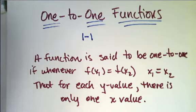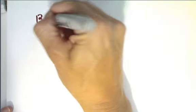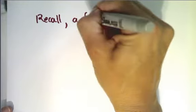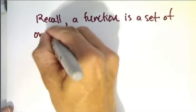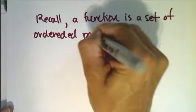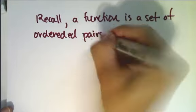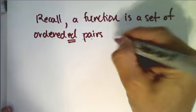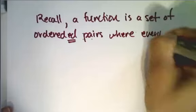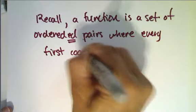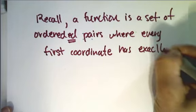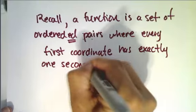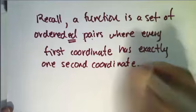Now that should sound familiar to you based on how we define functions in the first place. So let's recall: a function is a set of ordered pairs — and I want to emphasize that they're ordered — where every first coordinate has exactly one second coordinate. So for each x, there is exactly one y.